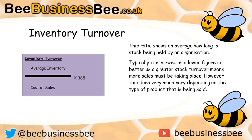However, the answer also varies depending on the product. For example, luxury sports cars won't sell as frequently as standard cars. It also depends on whether the selling price is profitable, so you need to compare this ratio to the gross profit ratio to ensure the organization is making a profit. It's easy to increase inventory turnover by selling at a lower price or even at a loss. The formula is: average inventory divided by cost of sales, times 365.